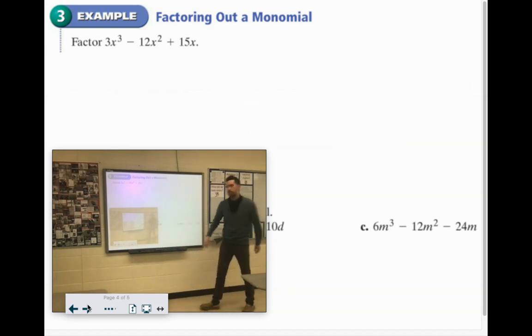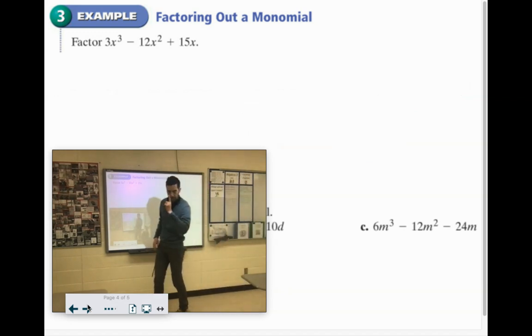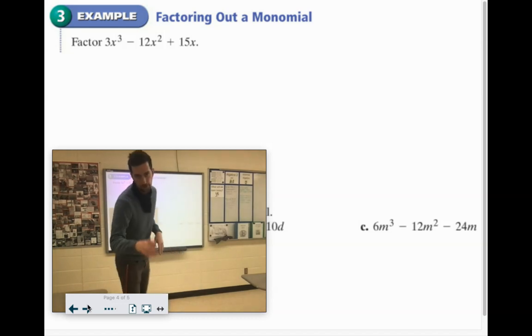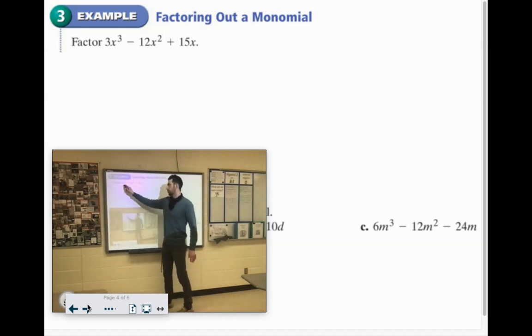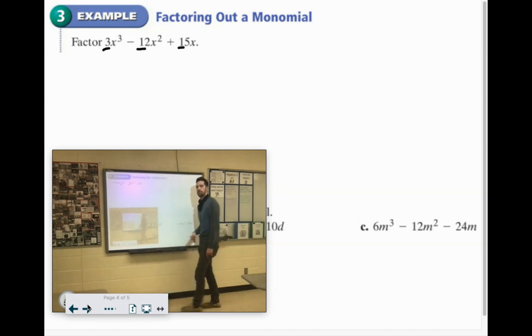Now we will factor it completely. The first step of factoring is finding that greatest common factor, that thing they all have in common. So 3x to the third, negative 12x, and positive 15x.